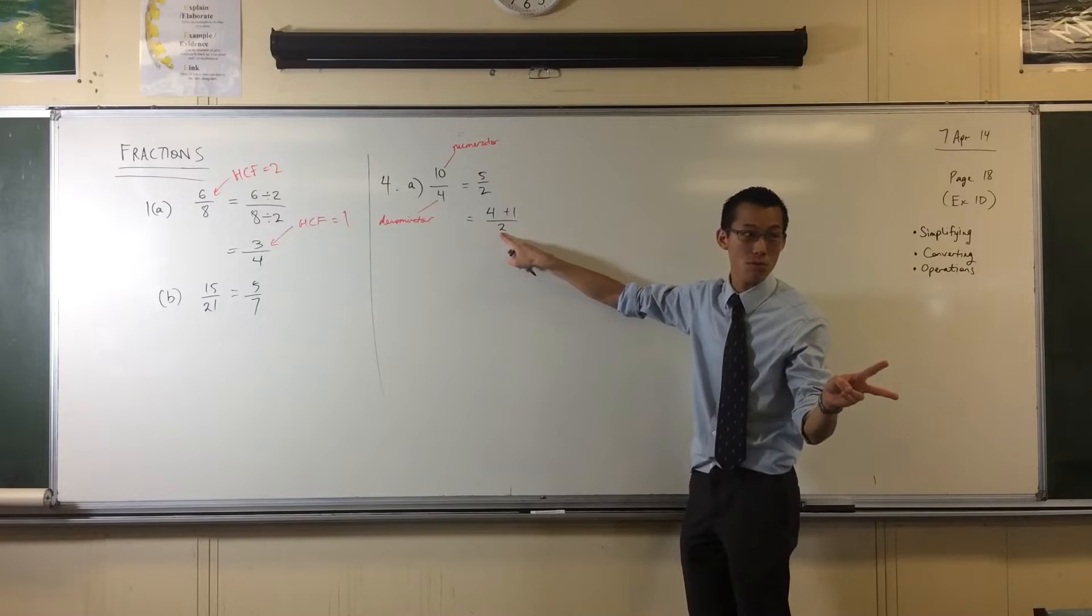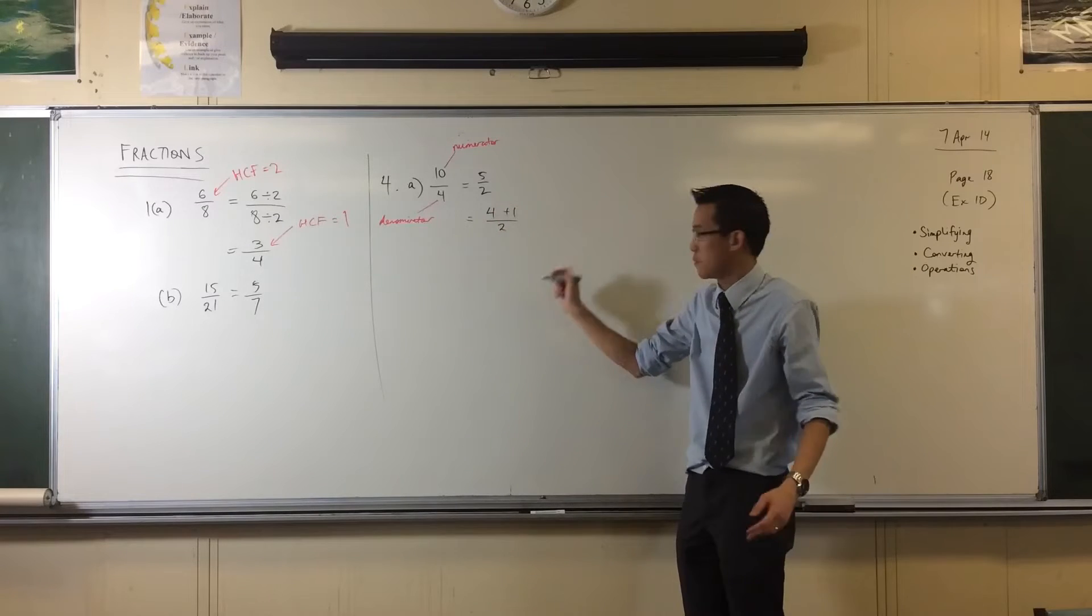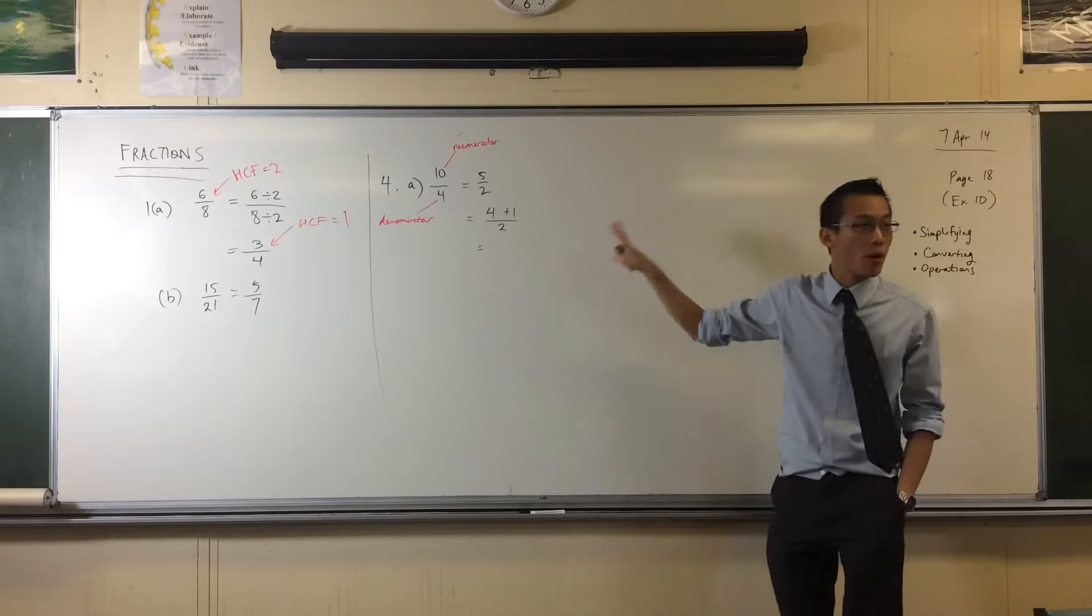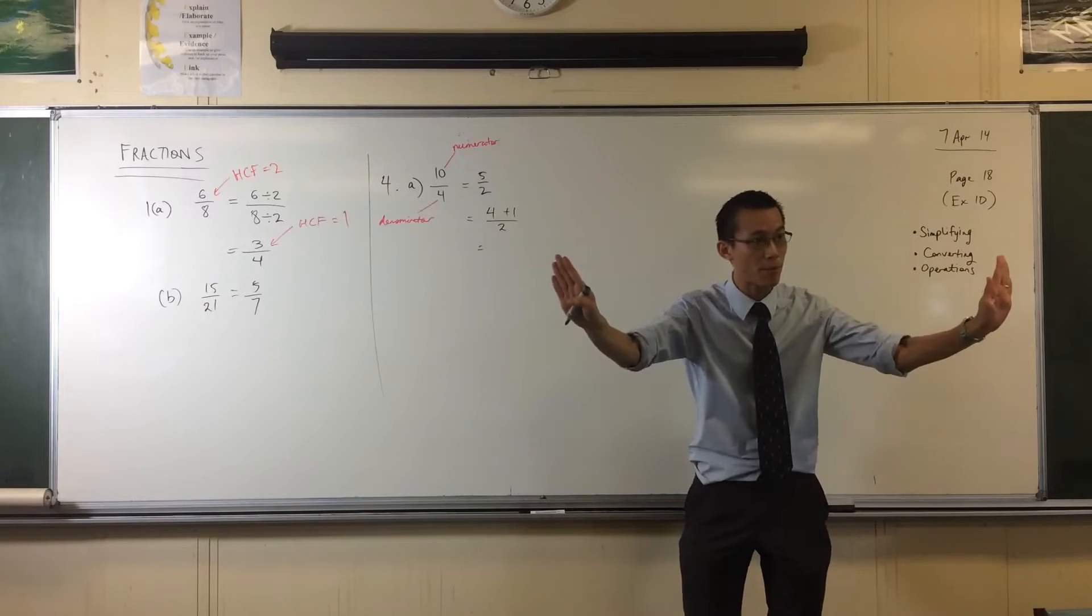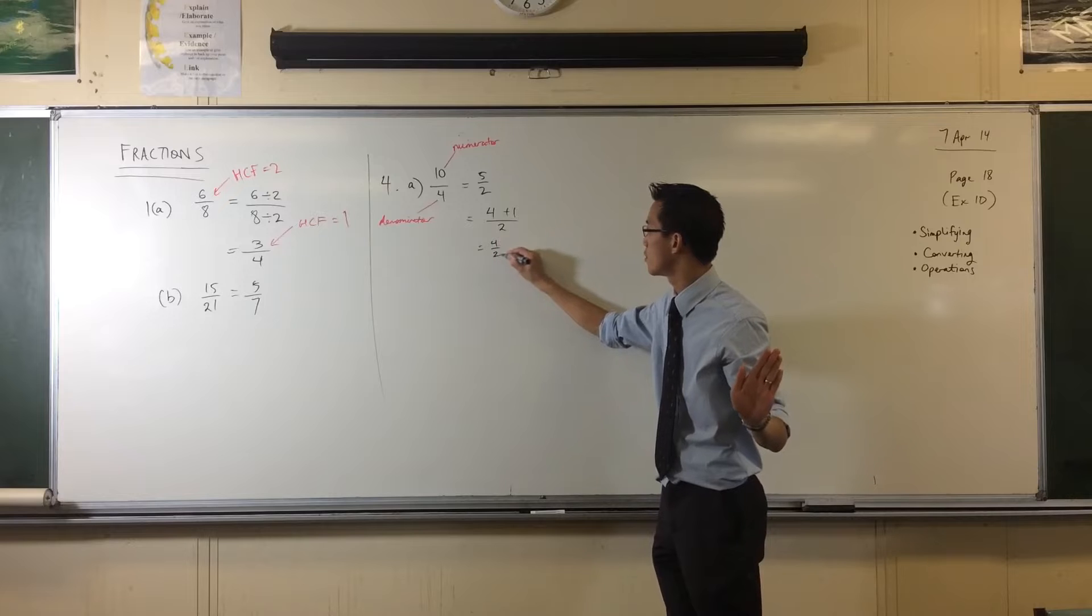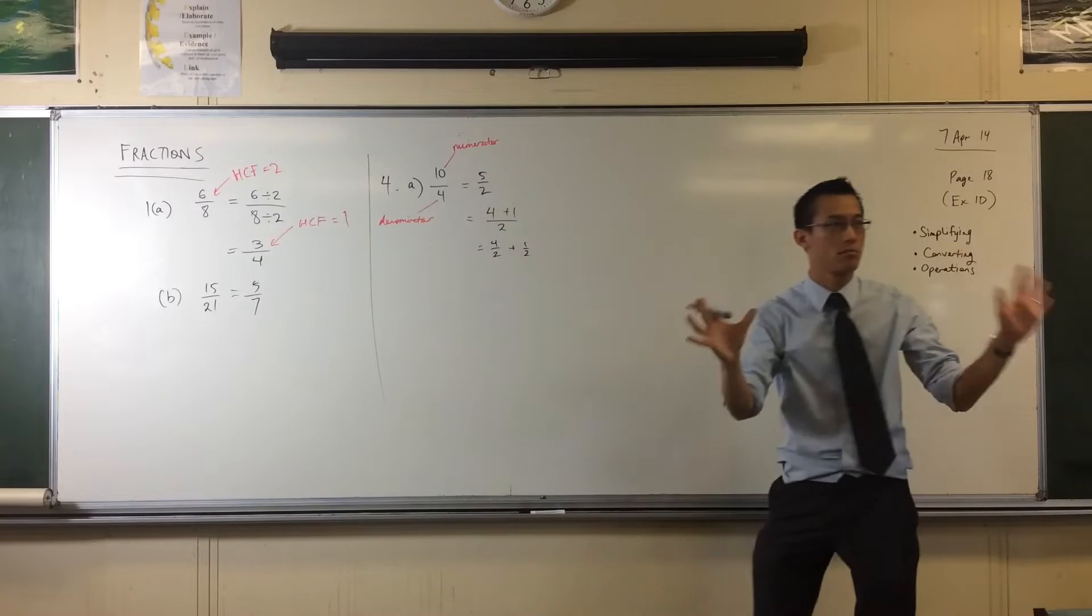I got the four from, you said it was twice, right? Twice times two. Four plus one, right? No problem. Now, because I've broken it up like that, I can write this as two separate fractions. Four over two and one over two. See that?